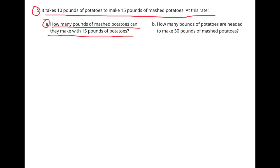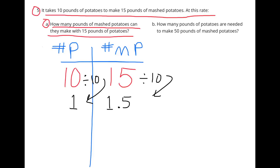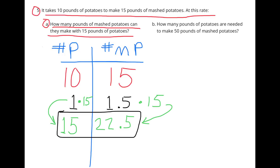Number 5. It takes 10 pounds of potatoes to make 15 pounds of mashed potatoes. At this rate, how many pounds of mashed potatoes can you make with 15 pounds of potatoes? I made a chart: starting with 10 pounds of potatoes and 15 pounds of mashed potatoes, I divide both by 10 to get 1 pound of potatoes makes 1.5 pounds of mashed potatoes. Multiplying by 15: 15 pounds of potatoes makes 22.5 pounds of mashed potatoes.